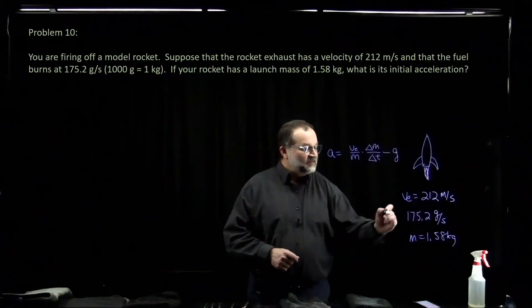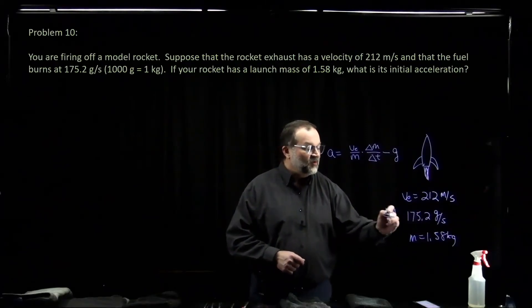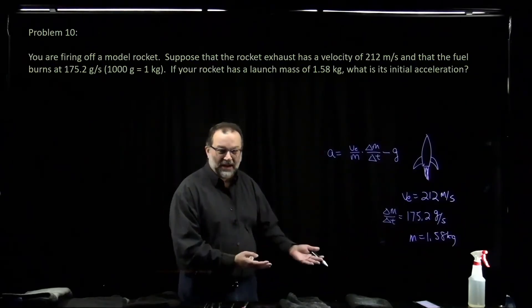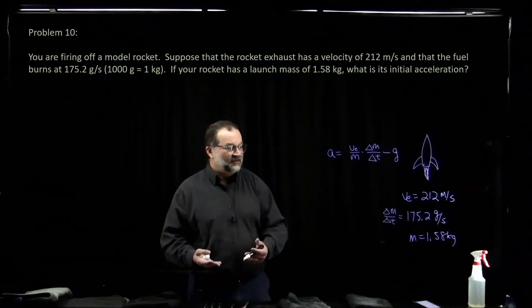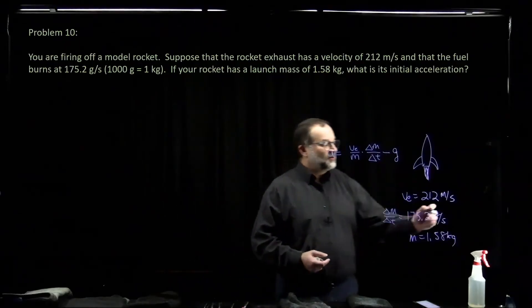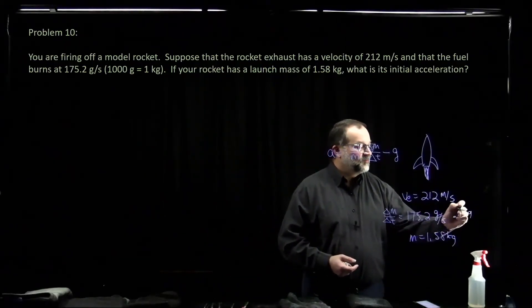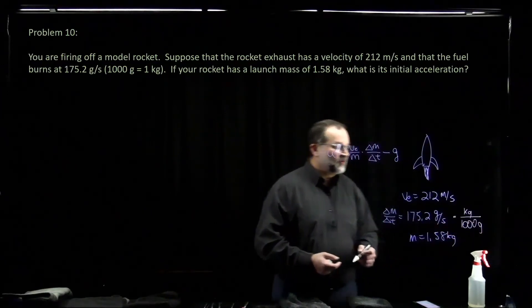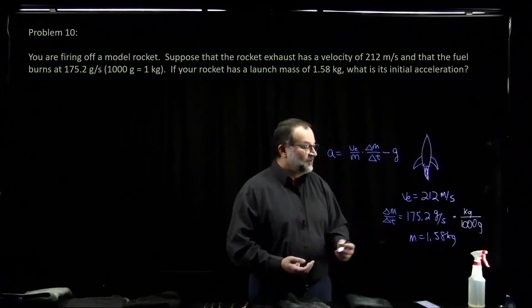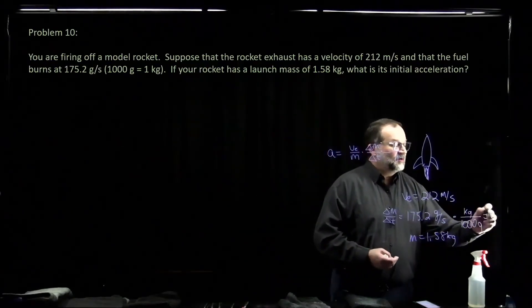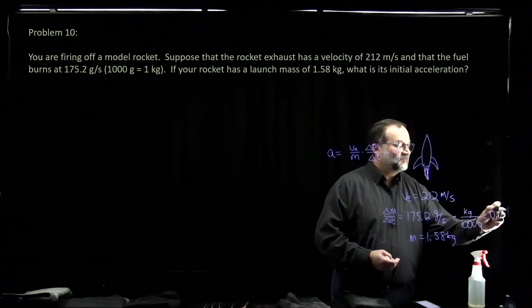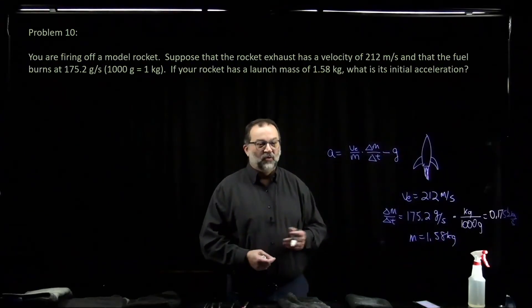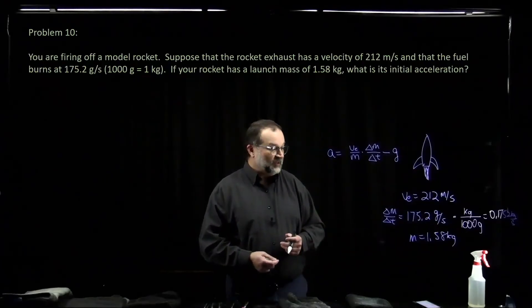Okay, so this is delta M over delta T. Our only issue with that is we've got grams. We need to convert to kilograms. And so we're going to multiply a kilogram divided by 1,000 grams to convert that to kilograms per second, which we get to simply 0.1752 kilograms per second.